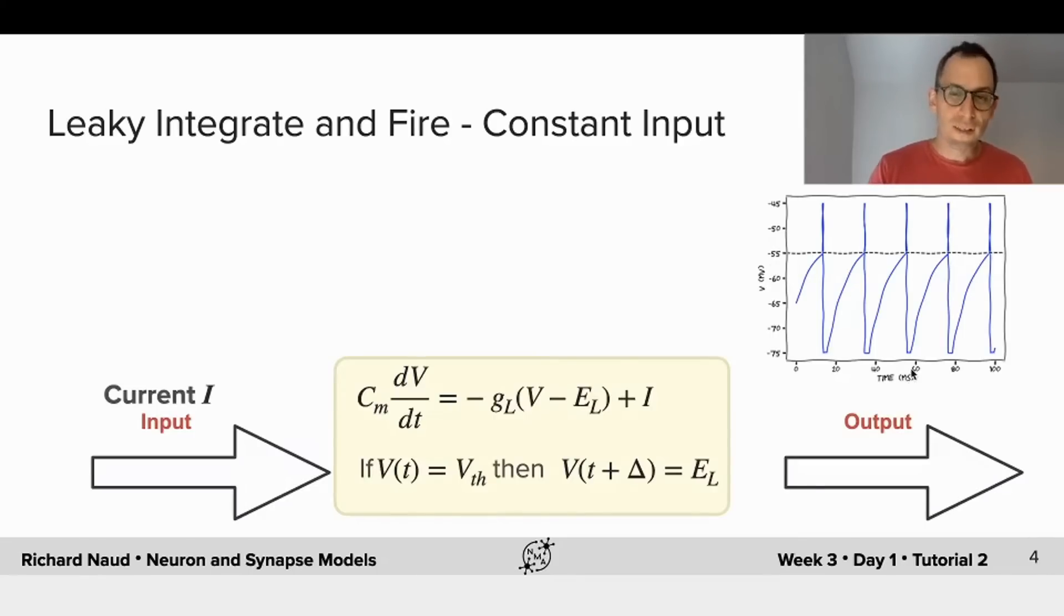And you see that after an absolute refractory period, the membrane potential follows a relaxation to a steady state, and it is first reaching the threshold, emits an action potential, resets. And the whole process starts again exactly the same way.